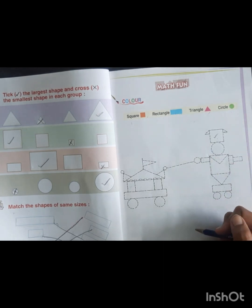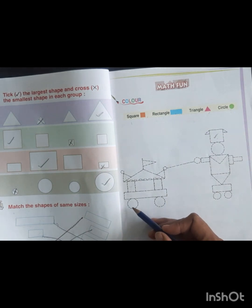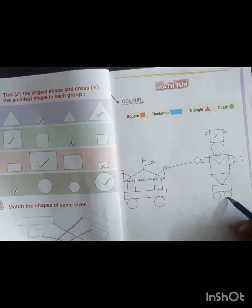Circle has green color, so it is very easy to find out circles - one, two, three, four, five, six, seven, eight. Color the green color in these circles. Hare Krishna.